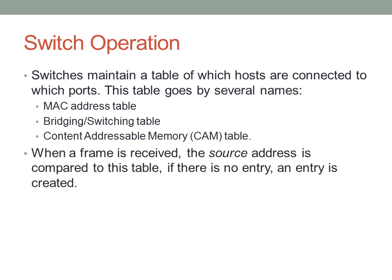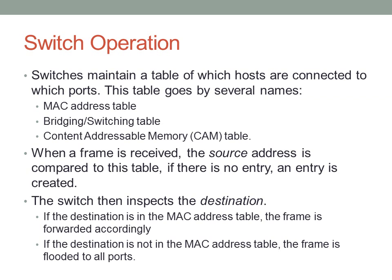When a frame is received, the switch notes the source address of that frame. By looking at the source address, the switch knows what device it came from and what interface it came in on, and can create a mapping for that host. If there's no entry, it will create one; if there is an entry already in the MAC address table, it will renew that entry. The switch then looks at the destination address — if it has an entry, it forwards the frame out the correct interface; if not, it floods the frame out all other ports.